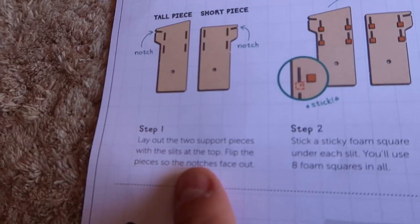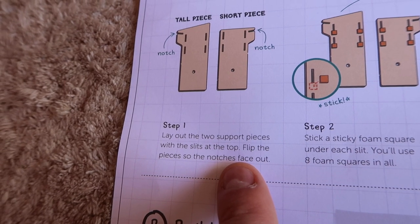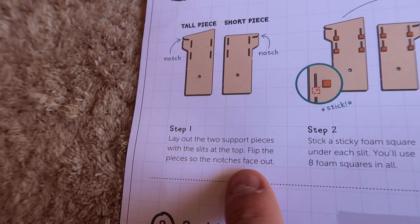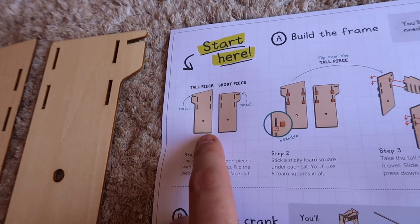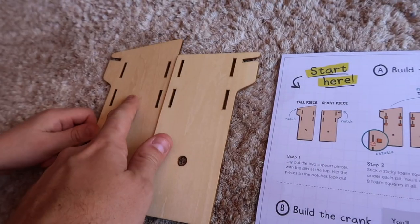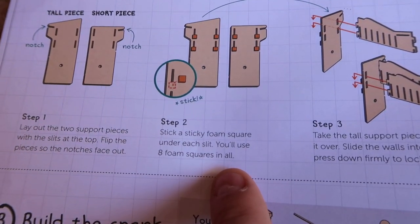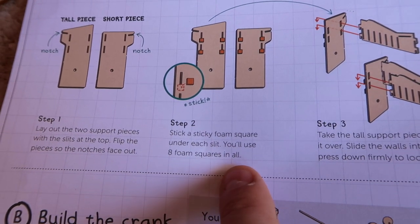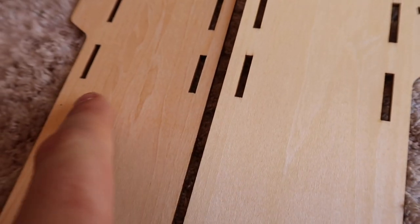Now it's time to build the frame. Step one says lay out the two support pieces with the slits at the top. Flip the pieces so the notches face out. So they've got the tall one on the left and the short one here with the notches facing out. Stick a sticky foam square under each slit. You'll use eight foam squares in all. So do you see where to put them? Right here underneath the little slits.